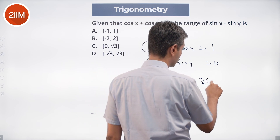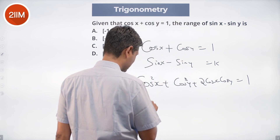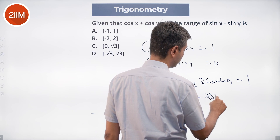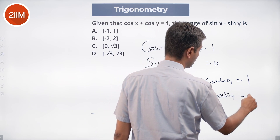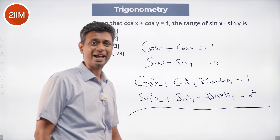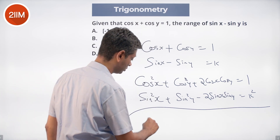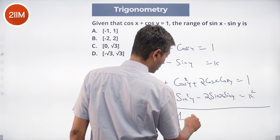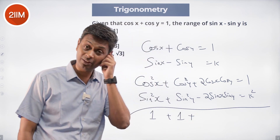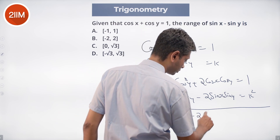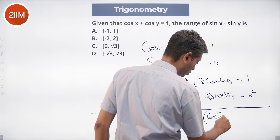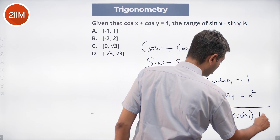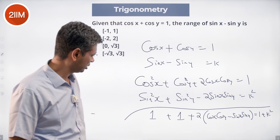...plus 2 cos x cos y equals 1. Then sine² x plus sine² y minus 2 sine x sine y equals k². We add these two equations: cos² x plus sine² x is 1, cos² y plus sine² y is 1, plus 2 times (cos x cos y minus sine x sine y).